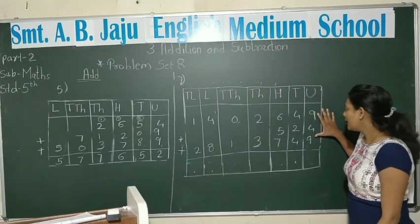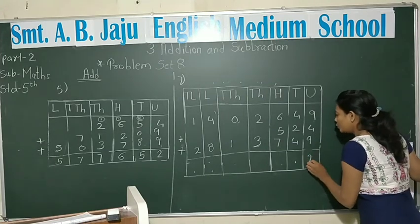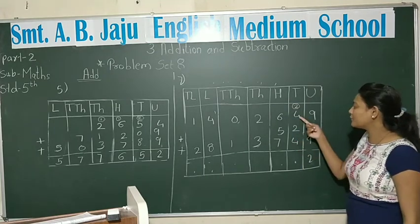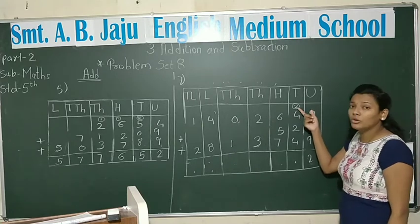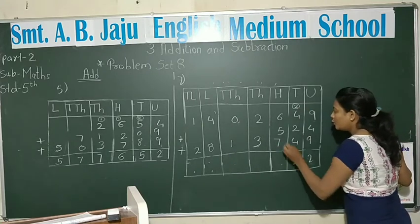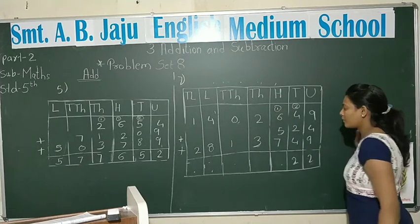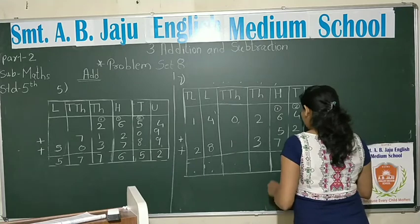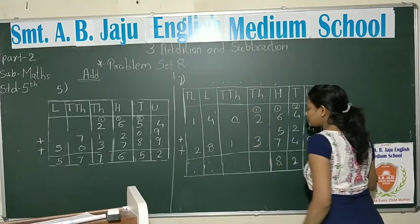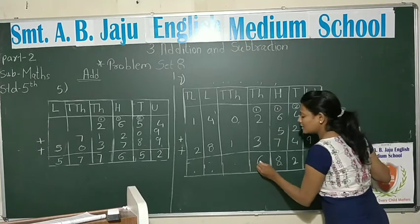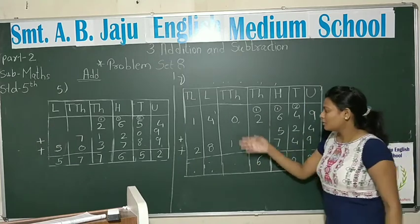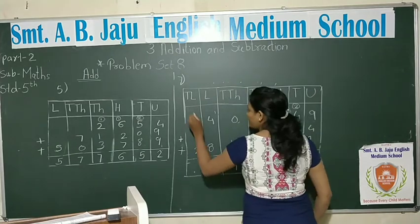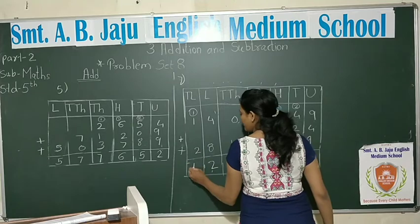So students, let's solve: 9 plus 9 is 18, 18 plus 4 is 22, write 2, carry 2. 4 plus 4 is 8, 8 plus 2 is 10, 10 plus 2 is 12, write 2, carry 1. 5 plus 1 is 6, 6 plus 6 is 12, 12 plus 7 is 19 — write 8, carry 1. 2 plus 1 is 3, 3 plus 3 is 6. 0 plus 1 is 1. 8 plus 4 is 12, write 2, carry 1. 2 plus 1 is 3, 3 plus 1 is 4.